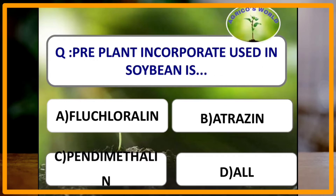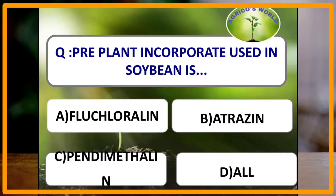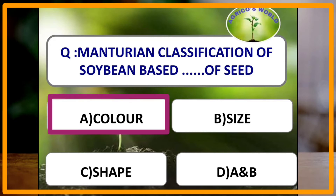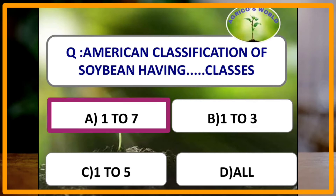Preplant incorporated herbicide used in soya bean is applied at the rate of 1 kg per hectare. Manchurian classification of soya bean is based on which of the following properties of seed? The answer is color and it is divided into 3 classes. American classification of soya bean has 1 to 7 classes.